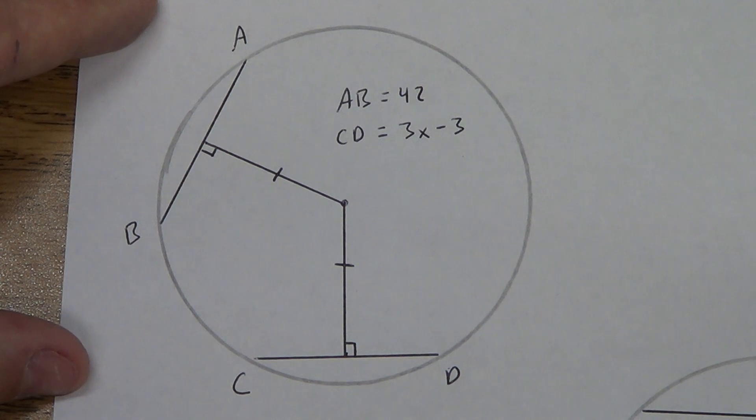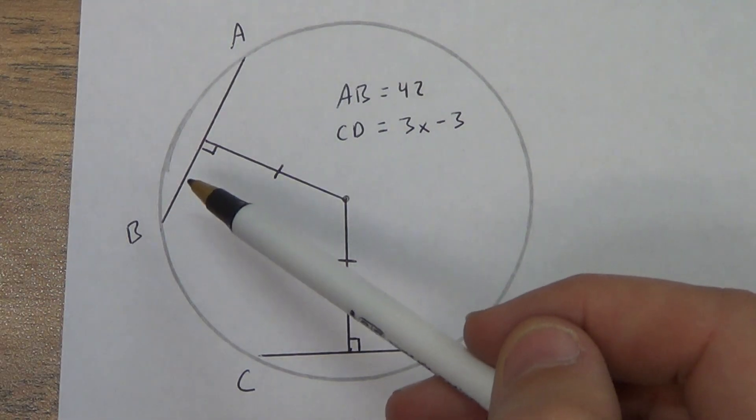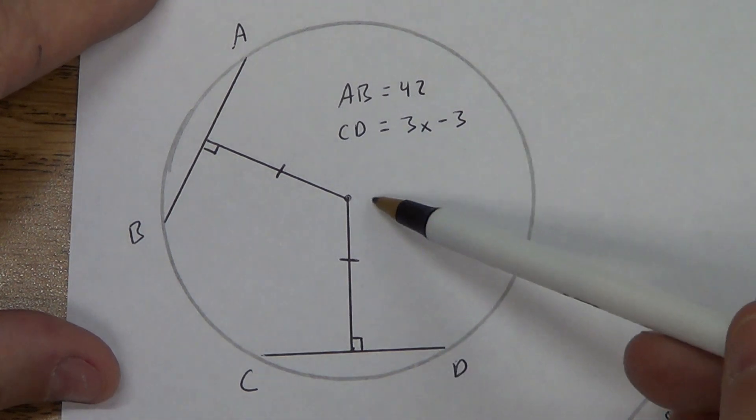Alright, so you should have this copied down. If you've already solved it, that's great. Let's take a look at what we've got. So we know that AB, this chord right here, is 42. And we know that this chord down here is 3x minus 3. Now, this is the center of our circle.